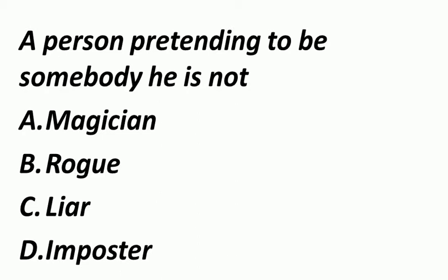A person pretending to be somebody he is not — मतलब ऐसा व्यक्ति जो कुछ और होने का दिखावा करता है, एक तरीके से बहरूपिया. ऐसे व्यक्ति को हम कहते हैं Imposter. Magician मतलब जादूगर. Rogue मतलब दुष्ट व्यक्ति, undisciplined व्यक्ति. Liar — जो झूठ बोलता है.